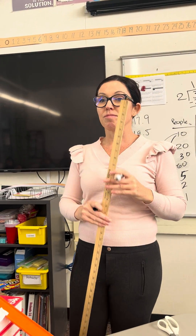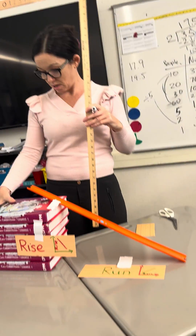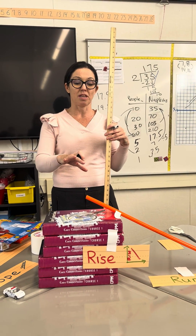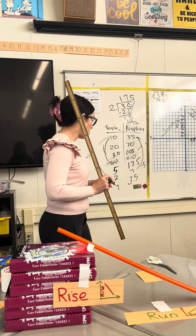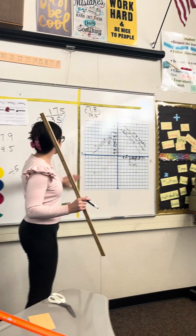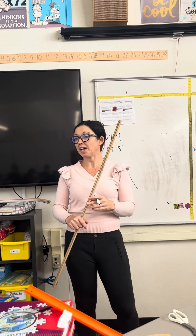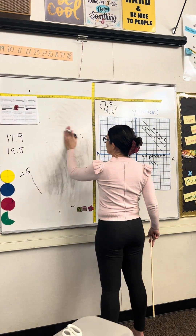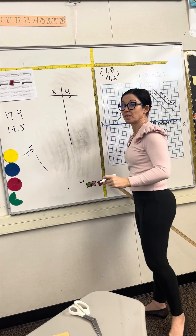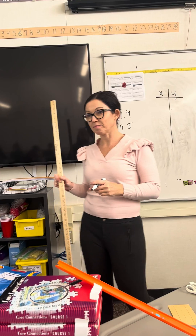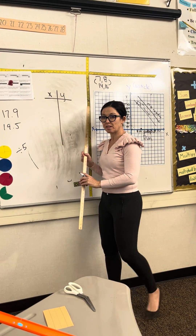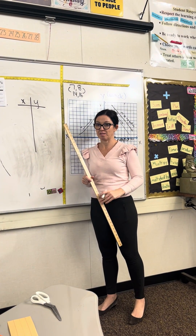All right, friends. What you're going to be doing today: you're going to be using the ruler and six books. And this time, you're going to be measuring the rise and the run with a table of values. What is a table of values? What do I mean by measuring with a table of values? To graph it — those are called your points.